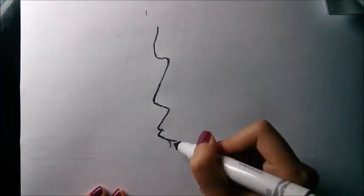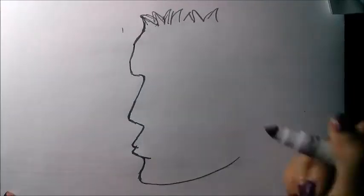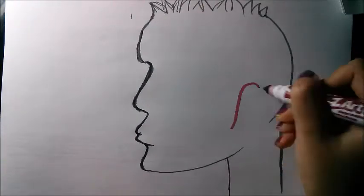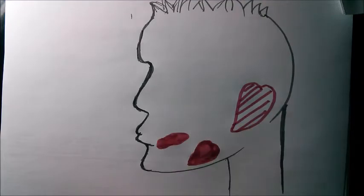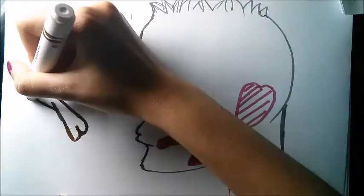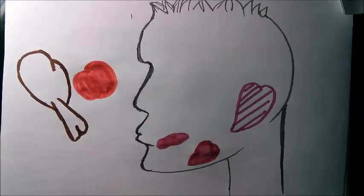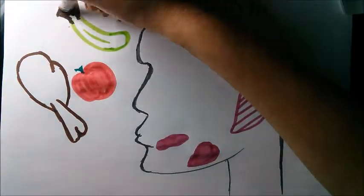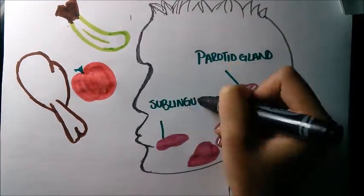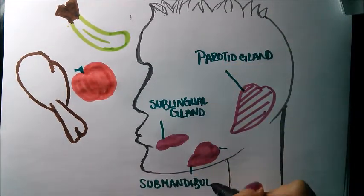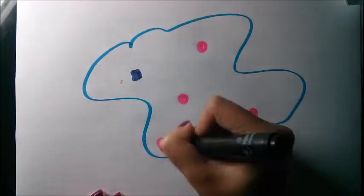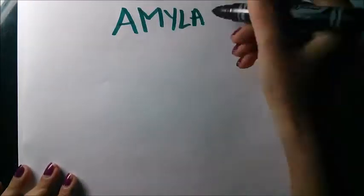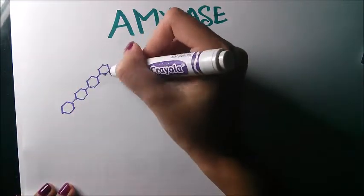The process of digestion begins in the mouth with the consumption of food. When food is being chewed, the oral cavity, which contains salivary glands, acts on the food with saliva. The salivary glands are divided into three major pairs: the parotid gland, the submandibular, and the sublingual gland. The glands collectively produce saliva, which acts as a lubricant in initiating the process of digestion.